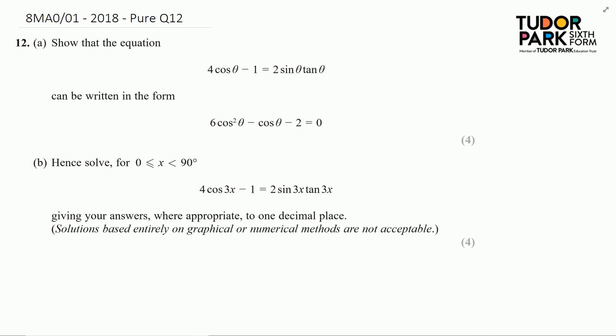On to question 12, we're looking at some trigonometric identities — specifically that tan θ equals sin θ divided by cos θ, and also that cos²θ + sin²θ = 1. Those are the identities I need to know. To start with, let's use the identity for tan.